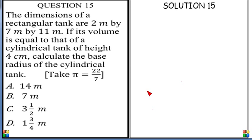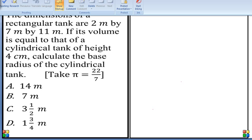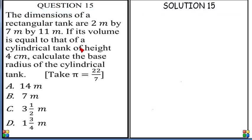If its volume is equal to that of a cylindrical tank of height 4 cm, that cm should be a typographical error there, because if you use cm here, you wouldn't get the answer. Calculate the base radius of the cylindrical tank. Take pi to be 22 over 7. I am going to start by assuming that 4 cm is just a typographical error and it is supposed to be meters. So let's change this to meters.